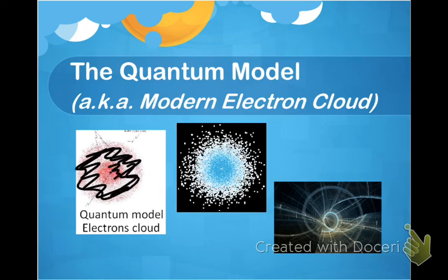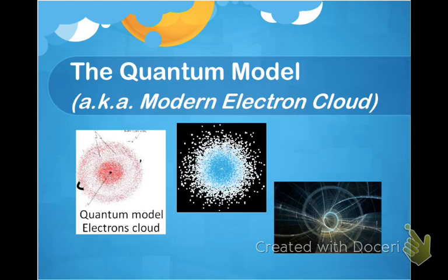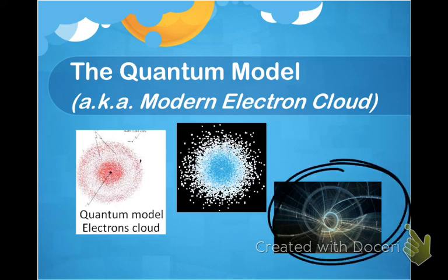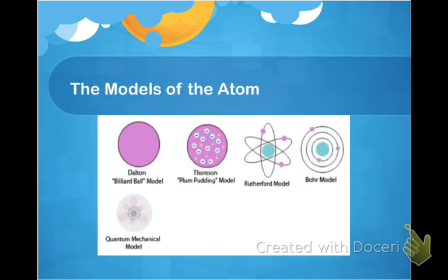The quantum mechanical model, also known as the modern electron model, ends up looking like a blur of energy surrounding the nucleus where electrons can be found. There is a region around the nucleus where the electron density is most dense. If you were theoretically riding on the back of an electron, this blurry cloud-like view is what it would look like.